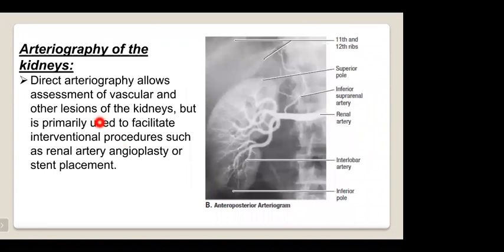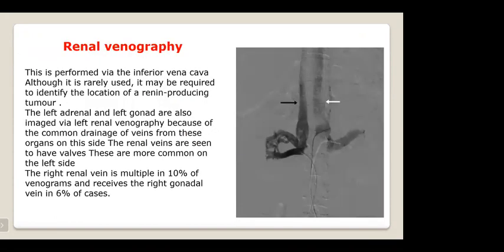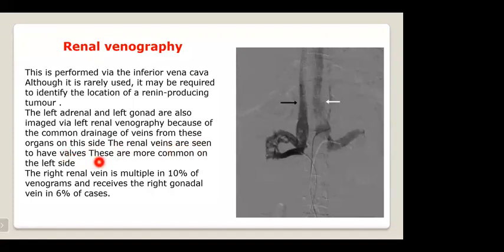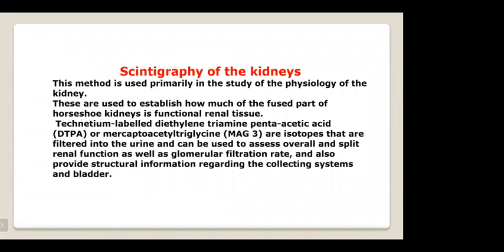Direct arteriography allows assessment of vascular and other renal lesions but is primarily used to facilitate interventional procedures such as renal artery angioplasty or stent placement. Venography is rarely performed but is mainly required to identify the location of renin-producing tumors or for renal vein thrombosis. The left adrenal and left gonad are also imaged via left renal venography because of their common venous drainage. Renal veins are seen to have valves, more common on the left; the right renal vein is multiple in 10 percent of venograms and receives the right gonadal vein in 6 percent.